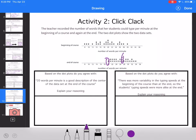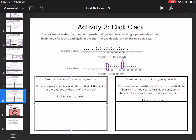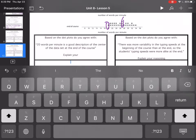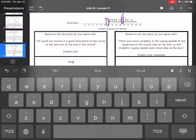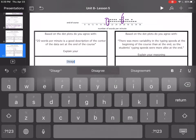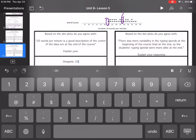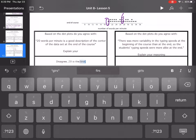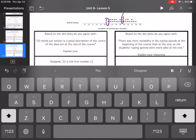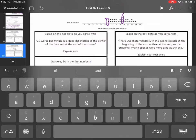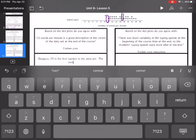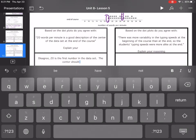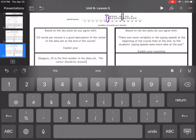I would say 27 should be the center. So do I agree? I disagree. I disagree. 20 is the first number in the data set. The center should be around 27, because that's the halfway point.